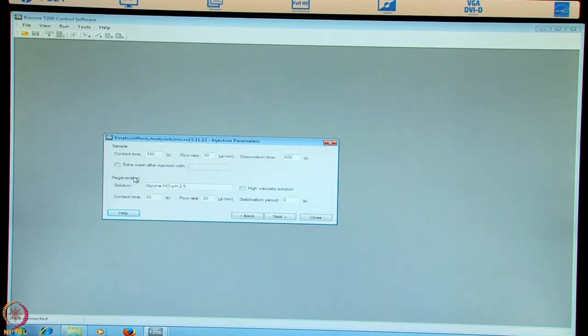Coming to the regeneration. The regeneration solution is glycine HCl pH 2.5 with a contact time of 30 seconds. Flow rate of 30 microliters per minute. Stabilization time of 0 seconds. And we now go on to the next tab.